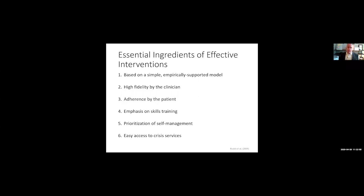The crisis response plan is based on all six of these principles. We'll talk about the empirically supported model it's based on. We're finding in our research that clinician reliability is really important — the way in which a clinician does things matters a lot. Not surprisingly, when patients use the crisis response plan, they experience faster reductions in suicide risk. The plan is designed to first help a person identify their own unique indicators of a crisis, followed by self-management strategies, and then later steps focusing on professional sources of support.